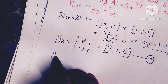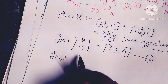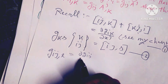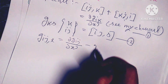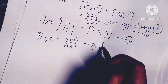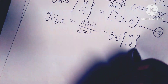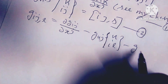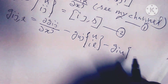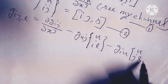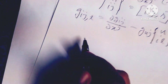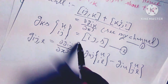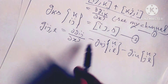The covariant derivative g_{ij,l} can be written as del g_ij divided by del x^l, minus g_{uj} times the Christoffel symbol [ui, l], minus g_{iu} times the Christoffel symbol [uj, l].